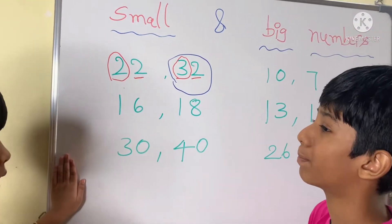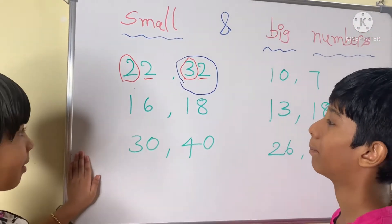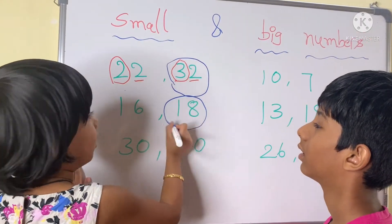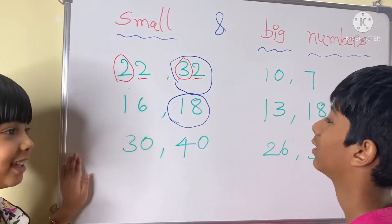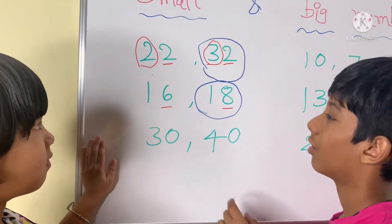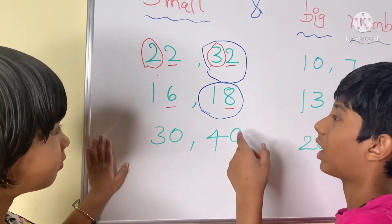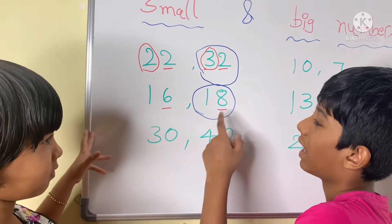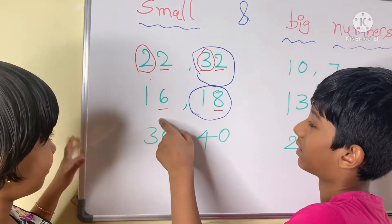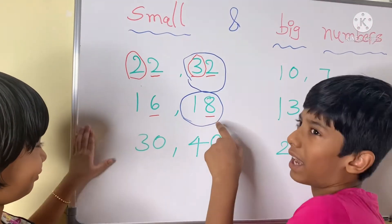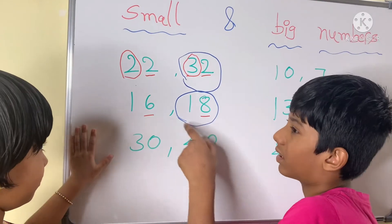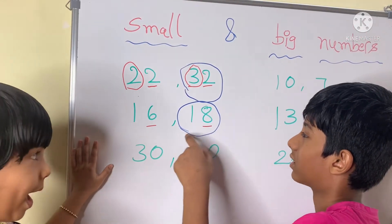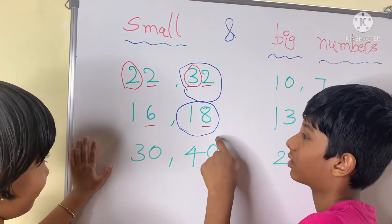16 and 18 — which is the big number? Eighteen. Why? Because in the ones column, 8 and 6 are different. So 8 is big and 6 is small. So 6 is lesser than 8, so 18 is big.